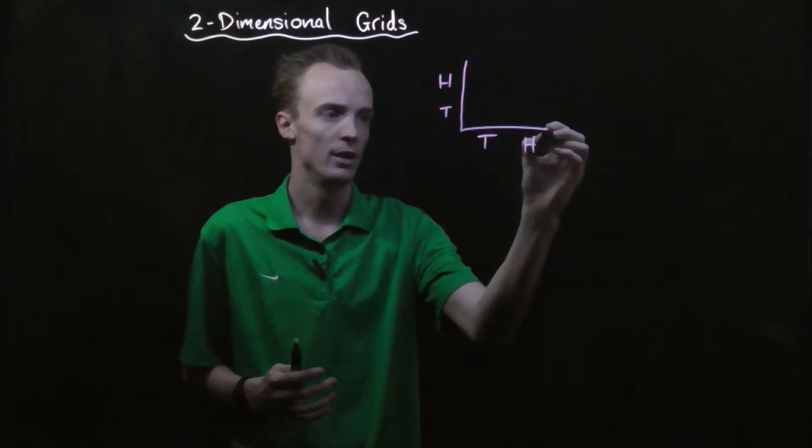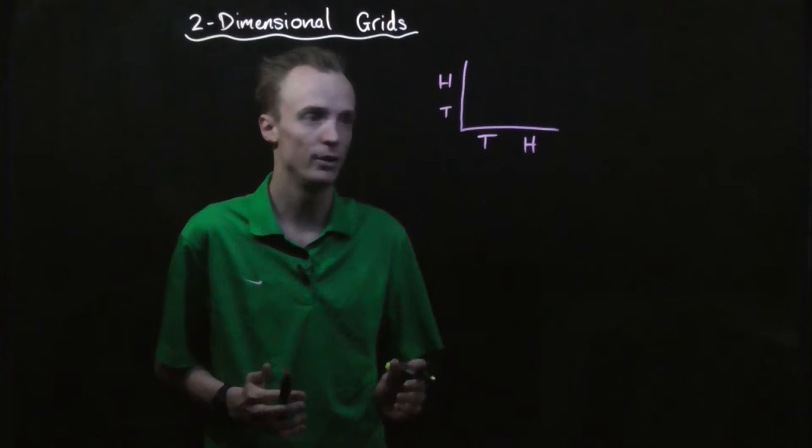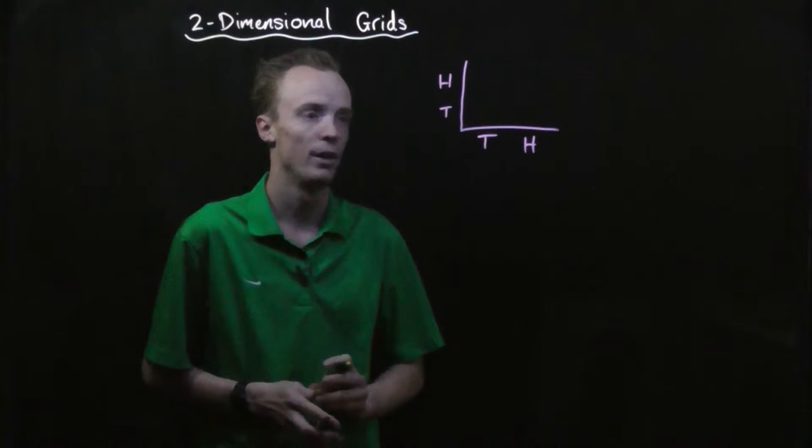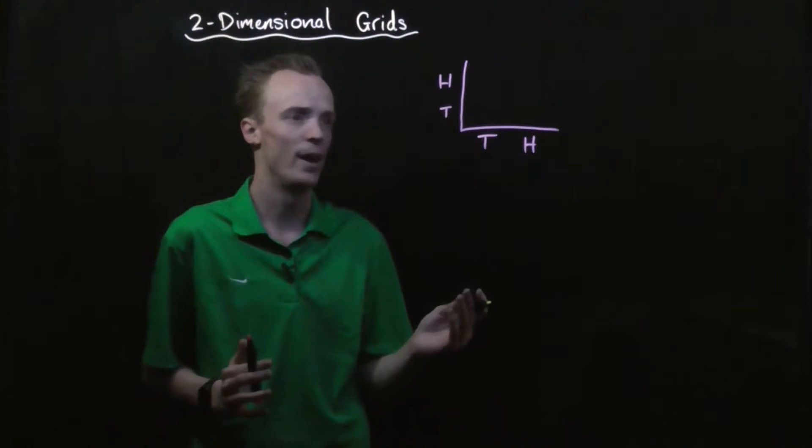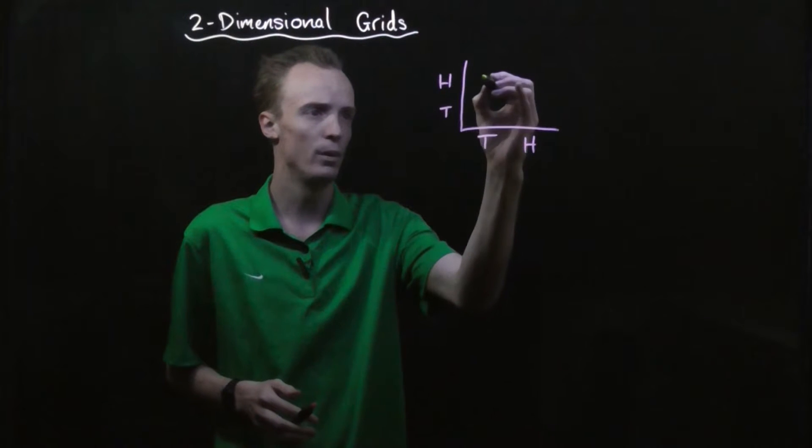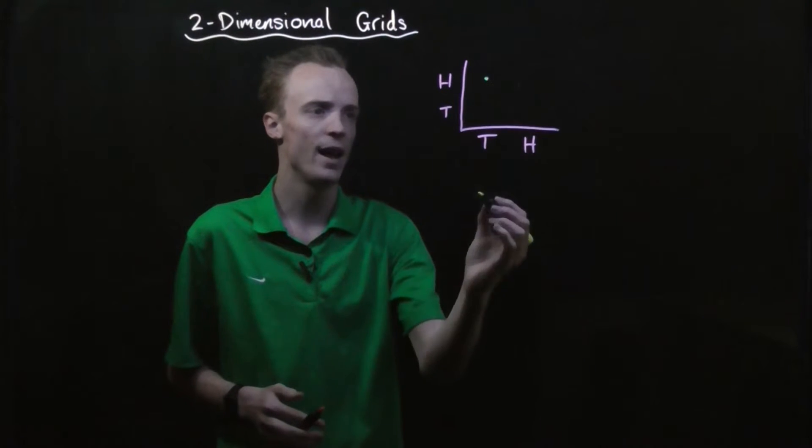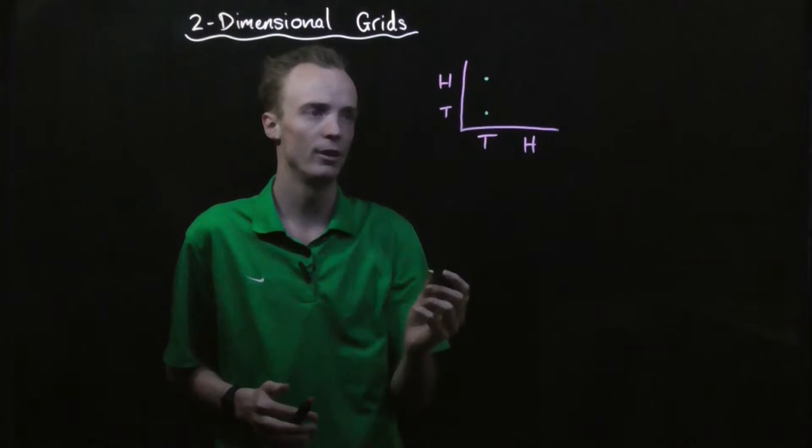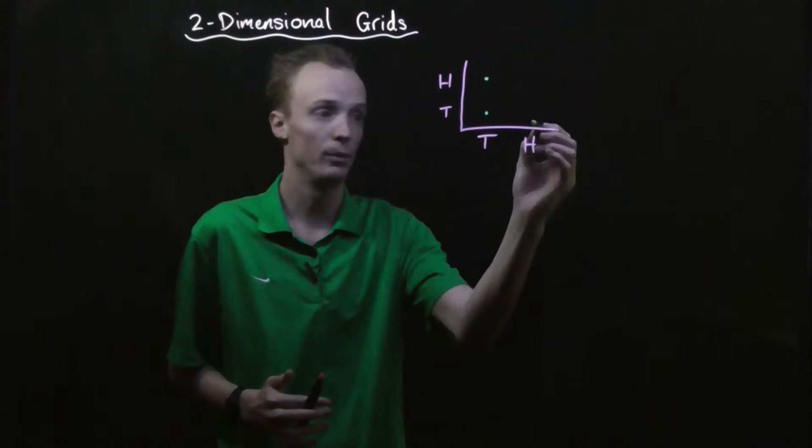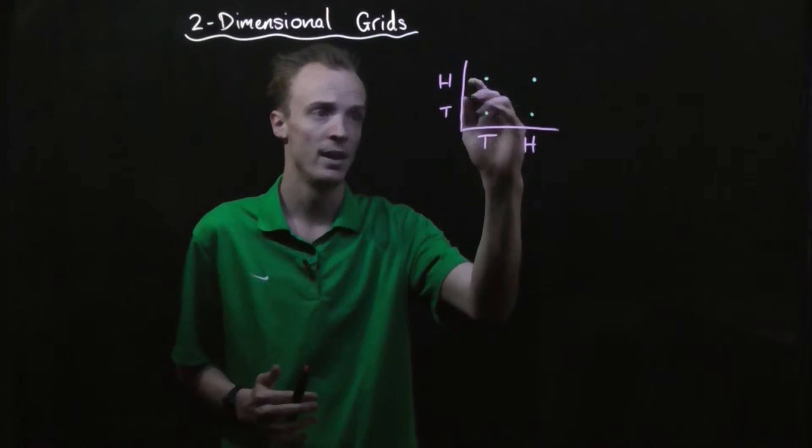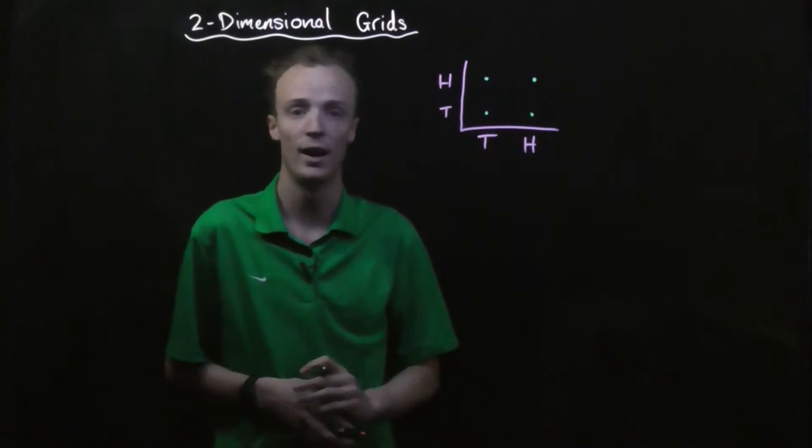What we can do here is we can set up what's known as a two-dimensional grid to represent all of our outcomes, and they can take various formats. For example, we could put a dot wherever we've got an outcome here within this grid. So we've got tails and tails, we've got a tails and heads, and a heads and heads, and then the first one I put was a heads and tails.